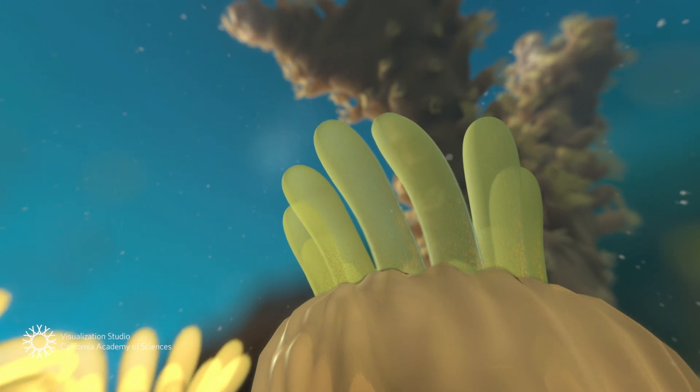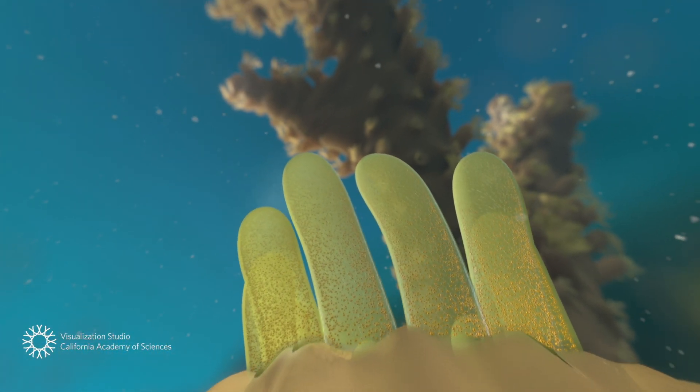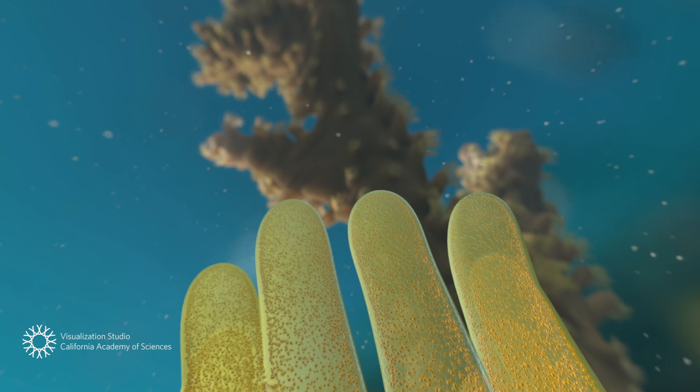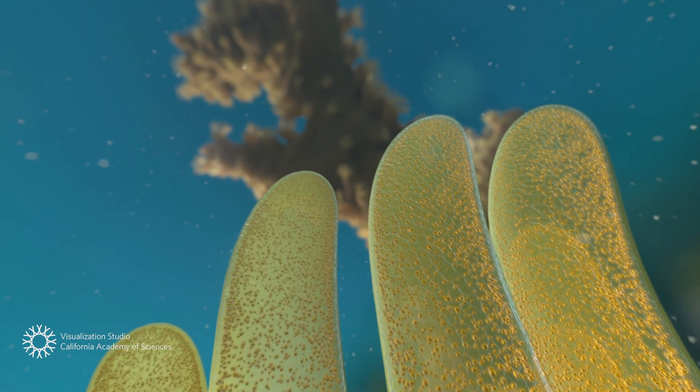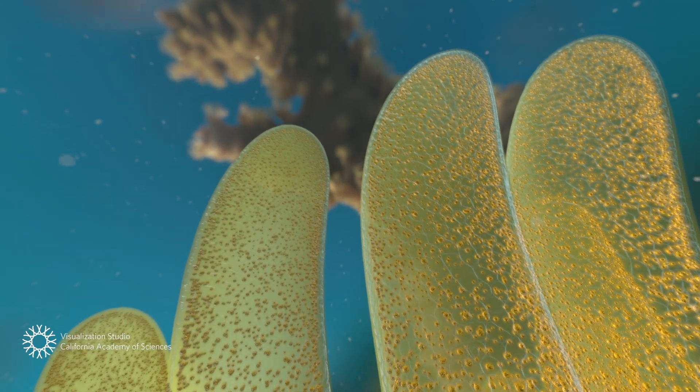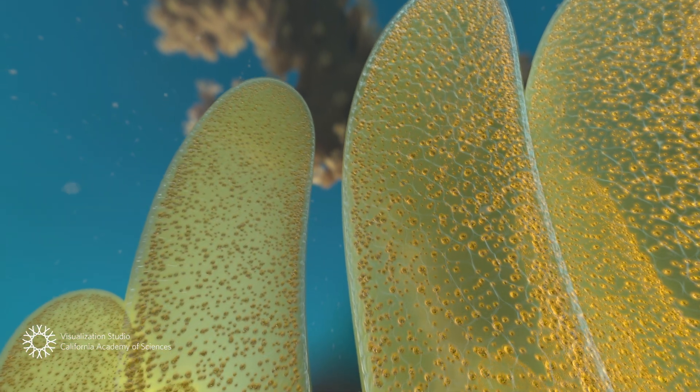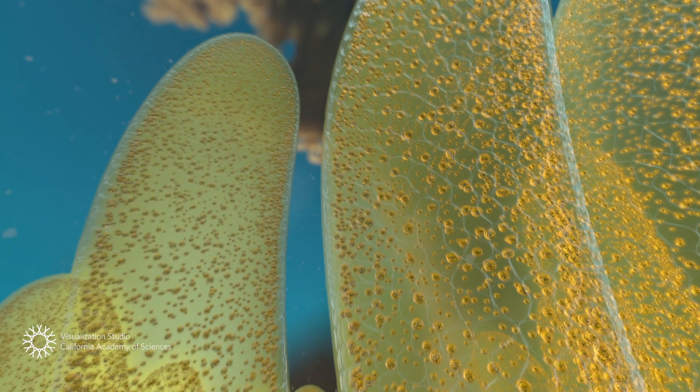We need to look more closely to find it. The inner layers of the polyp's tissue provide a home to algae called zooxanthellae. These algae give the coral its color.